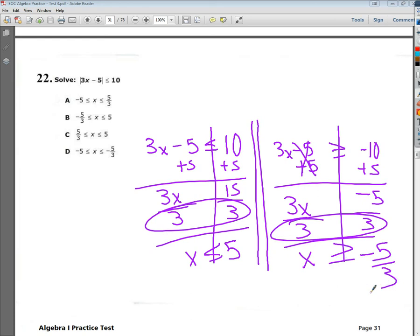So I can say that x is greater than negative 5 thirds. I need to finish this problem out by making some sort of mathematical statement. So I want to put my numbers in numeric order. So negative 5 thirds is small compared to 5, and it's 5 as big compared to that number. I'm going to put my x in the middle. It's like a little bit of an x sandwich. x is less than or equal to 5. It's greater than or equal to negative 5 thirds.